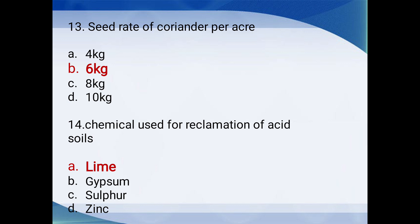Seed rate of coriander — coriander is nothing but kottimira (dhaniya). Options: 4, 6, 8, or 10 kg per acre. The correct answer is 6 kg per acre.